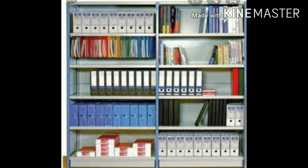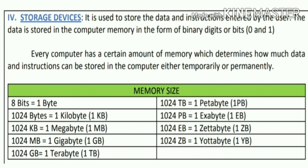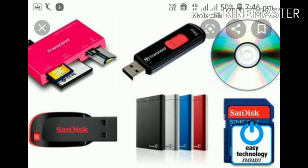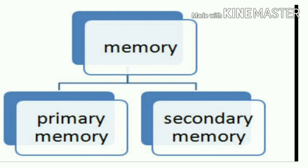Whether it's food, whether it's files, whether it's our clothes — similarly, in a computer, whenever there is some data, we need to store it. For that, we need devices. The computer has different sizes of memory. There are different types of storage devices: there is a CD, hard disk, and pen drive. Simply put, data is stored in the form of memory in the computer.